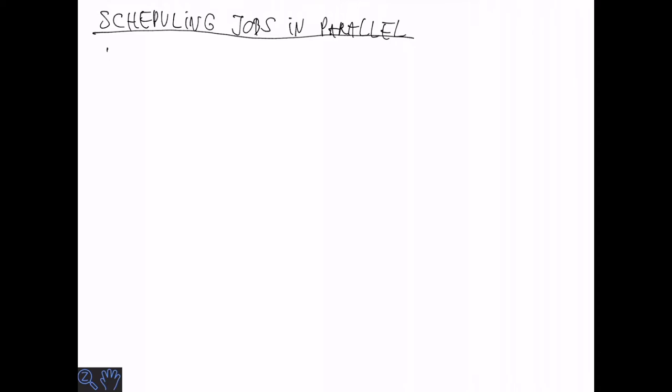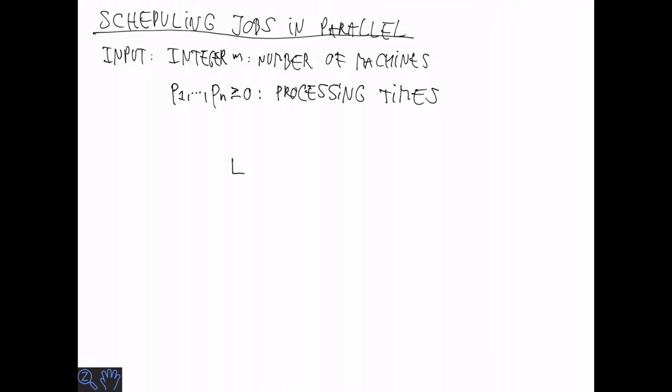We next consider the problem of scheduling jobs in parallel. The input consists of a number of jobs, let's say n jobs, that have different processing times p1 through pn, and we need to allocate these jobs to m machines.